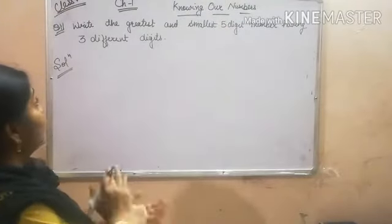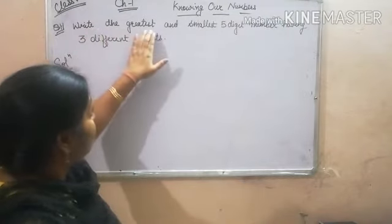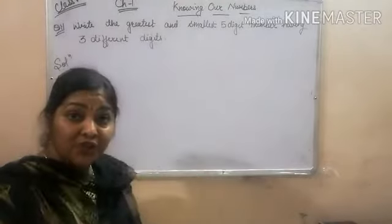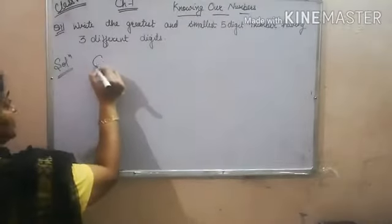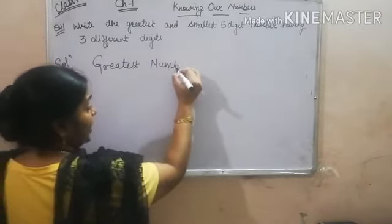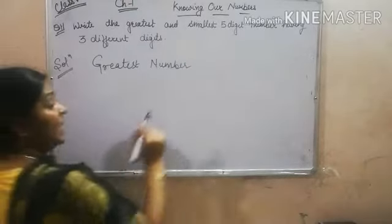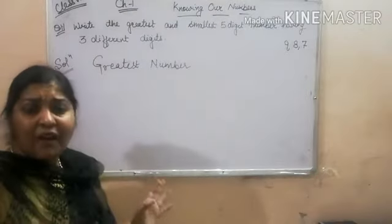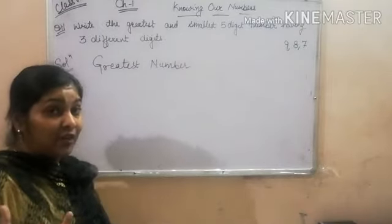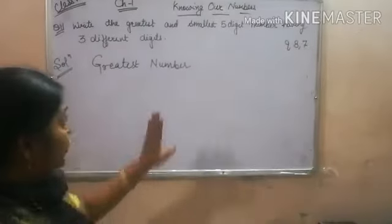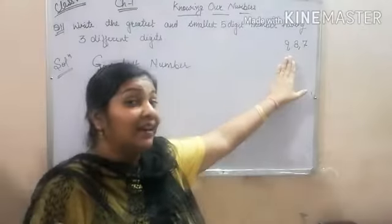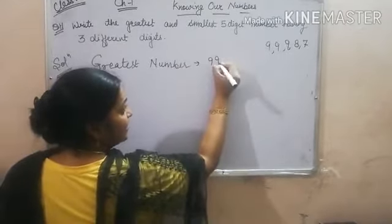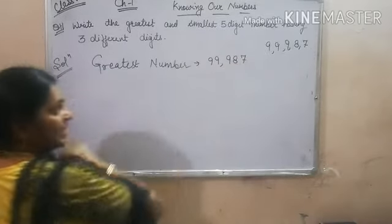Read this problem carefully. You have to write the greatest and smallest 5-digit number having 3 different digits. For the greatest 5-digit number using 3 different digits, write the 3 greatest digits: 9, 8, and 7. Since you can repeat digits, repeat the greatest digit 9 two more times to get 5 digits. So the greatest number is 99987.